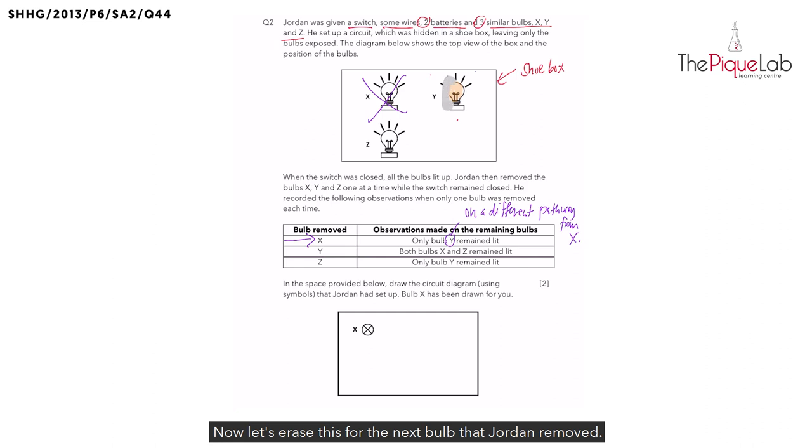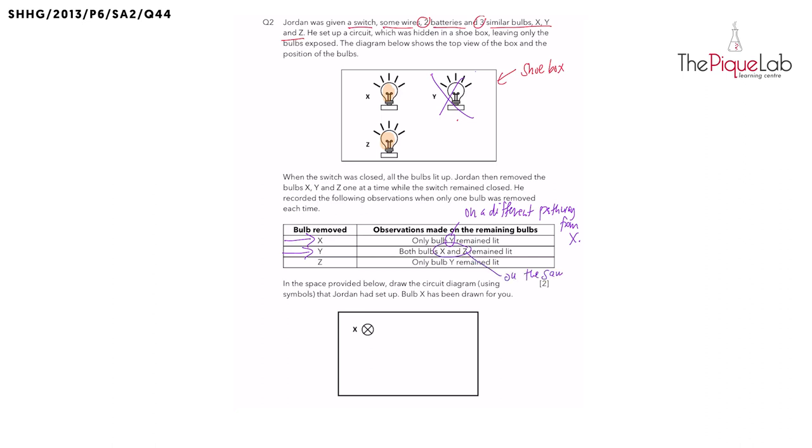Now let's erase this for the next bulb that Jordan removed. When he removed bulb Y like this, both X and Z remain lit. So are X and Z on the same pathway? Yes, they are definitely on the same pathway. Let's write it down.